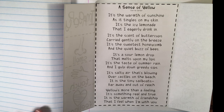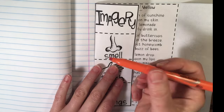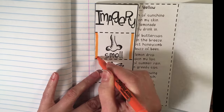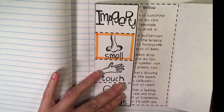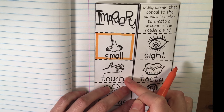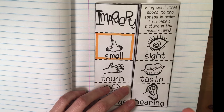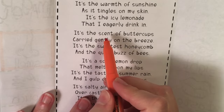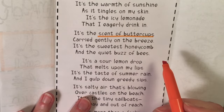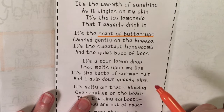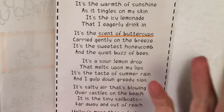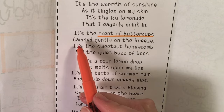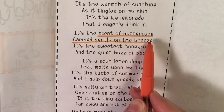Now let's look for some imagery. We're going to look first at the sense of smell — anything being described as something we can smell. Smell and taste are pretty similar when describing them, but some things you would really smell more than taste. Here we've got a specific one: "the scent of buttercups." A buttercup is a type of flower and sometimes we can smell its sweet scent because it's being blown to us on the breeze. So this is appealing to our sense of smell.